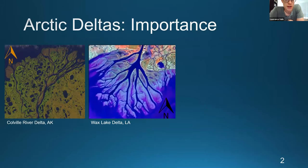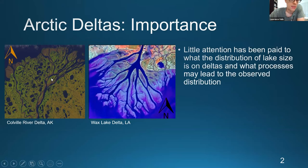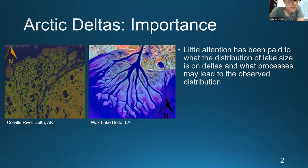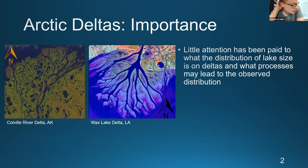Why do we care about these lakes? Arctic deltas are uniquely characterized by abundant lakes, whereas temperate deltas are not. This is the Colville River Delta in Alaska, and for reference this is the Wax Lake Delta in the Gulf of Mexico. You can see all these lakes that you don't see on other deltas, and little attention has been paid to what the distribution of lake sizes — the distribution of lake areas — actually is.